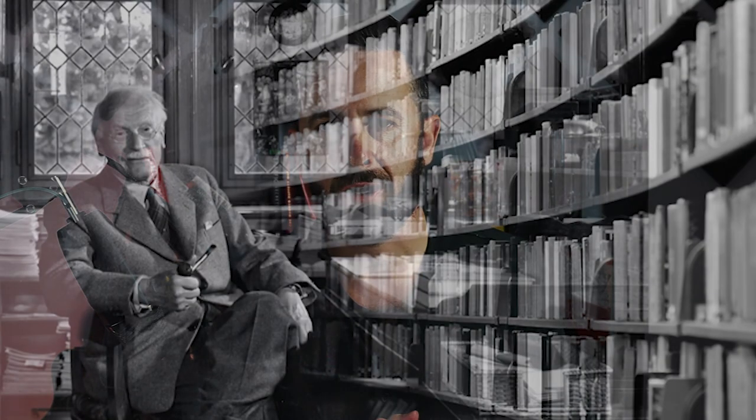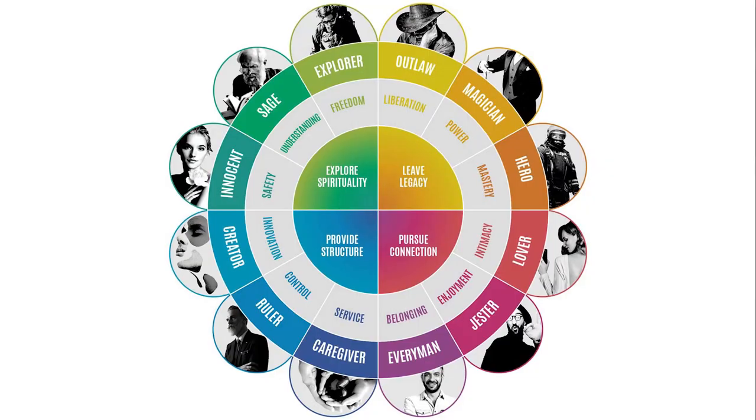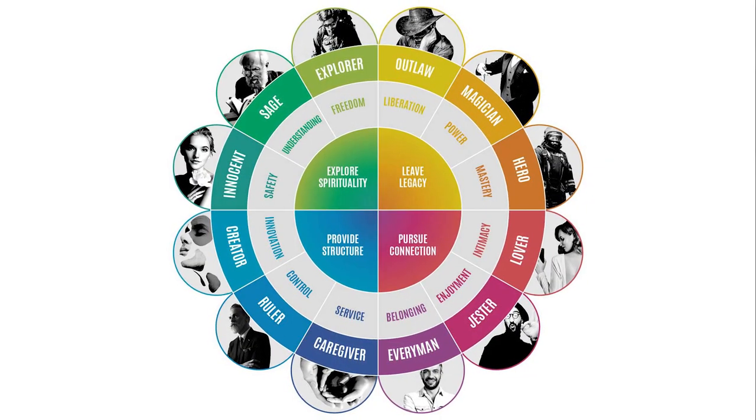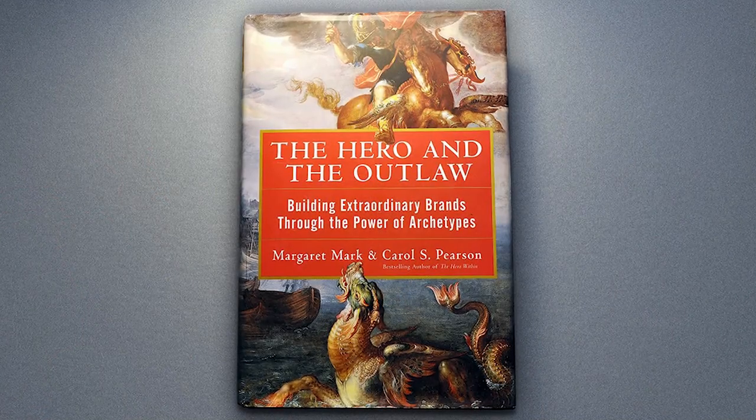Number four: align your brand with an archetype. Archetypes were initially developed by Carl Jung in the early 20th century as a way to categorize all personalities. This framework is made up of 12 distinct personalities that represent pretty much all human personalities. Archetypes were brought into the branding spectrum by Margaret Mark and Carol Pearson in their book 'The Hero and the Outlaw.' We can use the archetypes framework to identify who our audience is and what characteristics we should align our brand to.